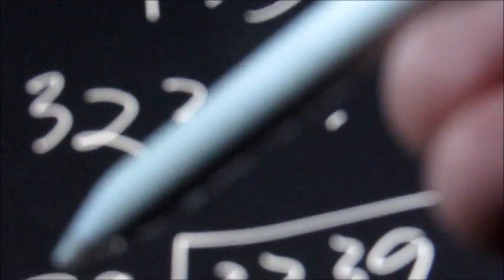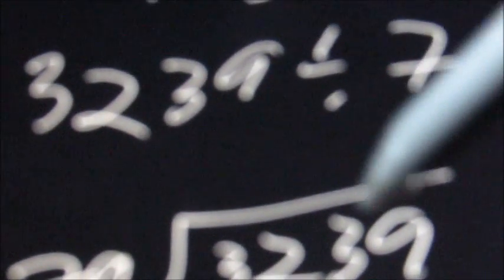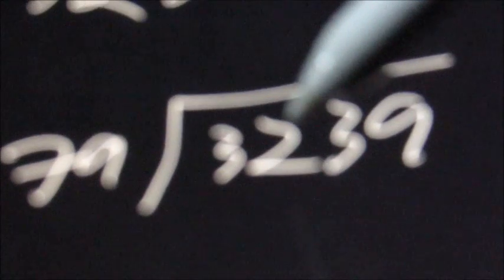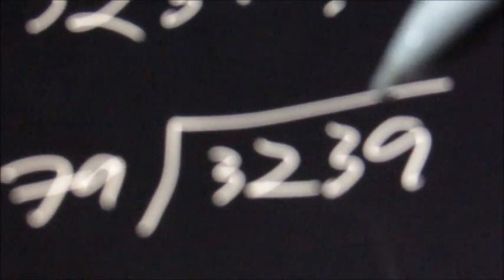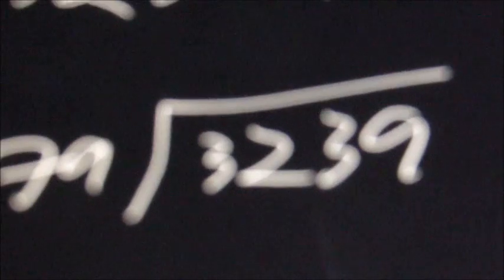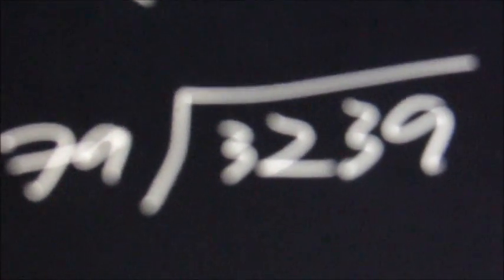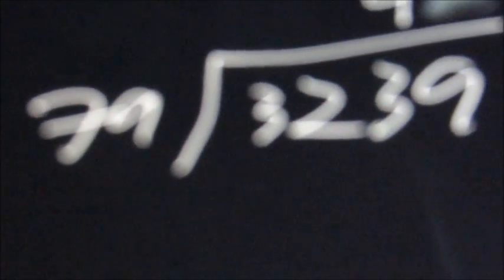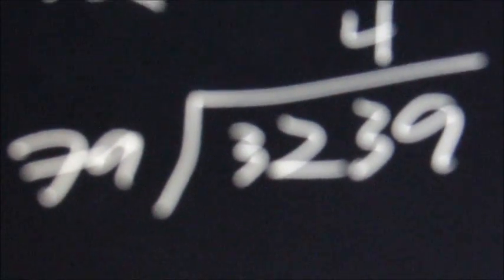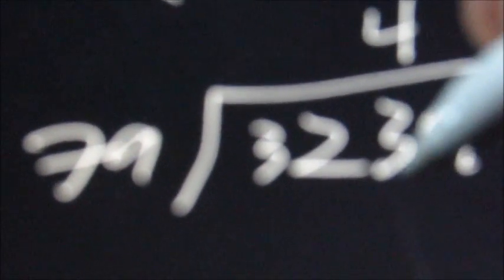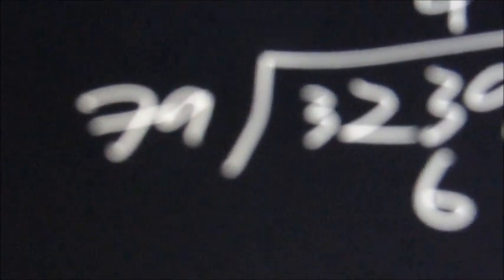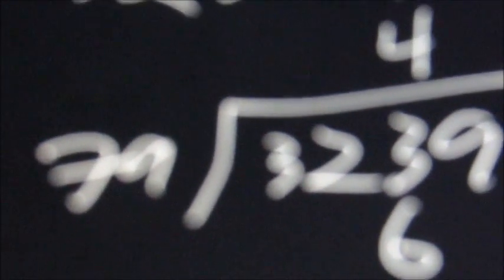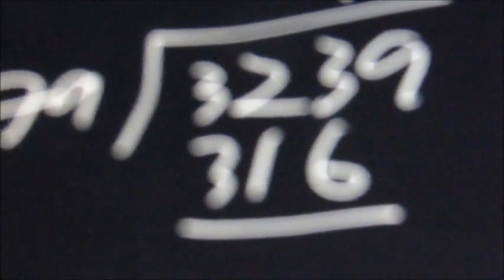What you're going to do is see if 79 will go into the numbers here. It won't go into the 3, it won't go into the 2, but it will go into 323 four times. 4 times 79, you're going to put it right under the last digit. 4 times 9 is 36, 4 times 7 is 28, 8 plus 3 is 31. Then subtract 323 minus 316 and get 7.